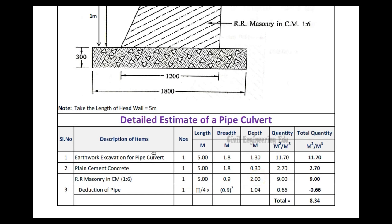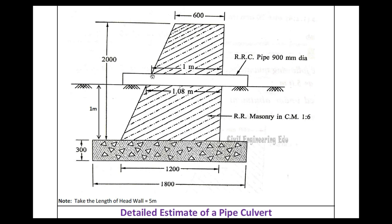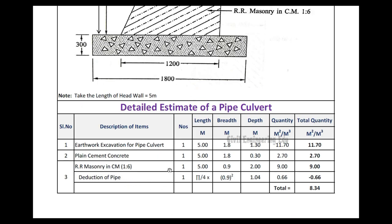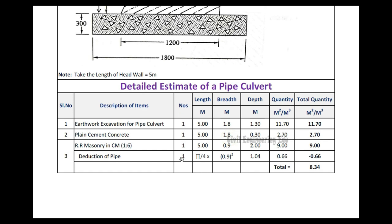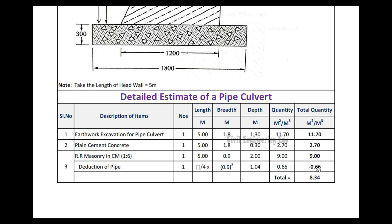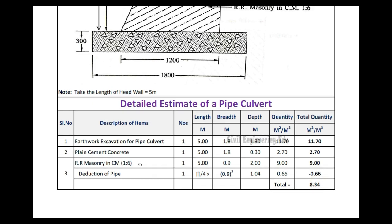We must deduct the pipe volume from the masonry. The pipe runs through the masonry where the width changes from 1.08 meters at the bottom to 1 meter at the top, so we take the average: (1.08 + 1.0) / 2. The pipe is a circular RCC pipe of diameter 900 mm, so the area is π/4 × d², multiplied by the length. This gives a deduction quantity of 0.66 cubic meters. Therefore, 9.0 minus 0.66 equals 8.34 cubic meters — the final RR masonry quantity.